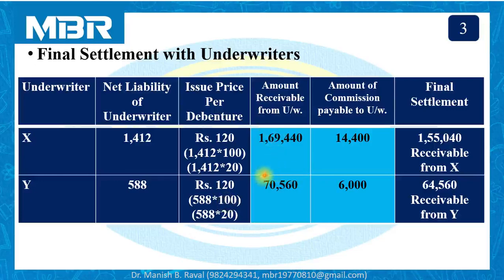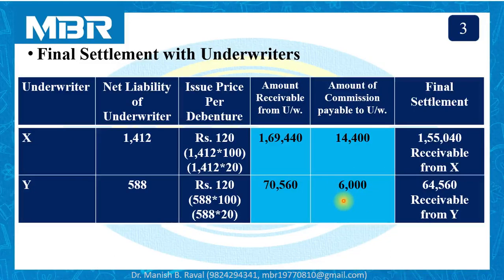For underwriter Y: net liability = 588 debentures. Amount receivable = 588 × 120 = rupees 70,560 (588 × 100 for debentures and 588 × 20 for security premium). Less commission payable = rupees 6,000. Net receivable from underwriter Y = rupees 64,560. Total amount receivable from both underwriters = rupees 2,19,600.